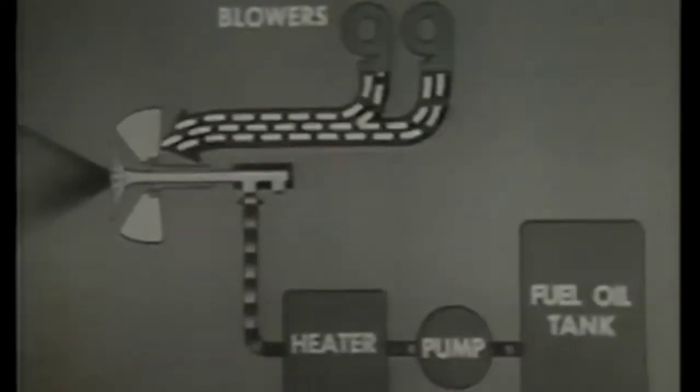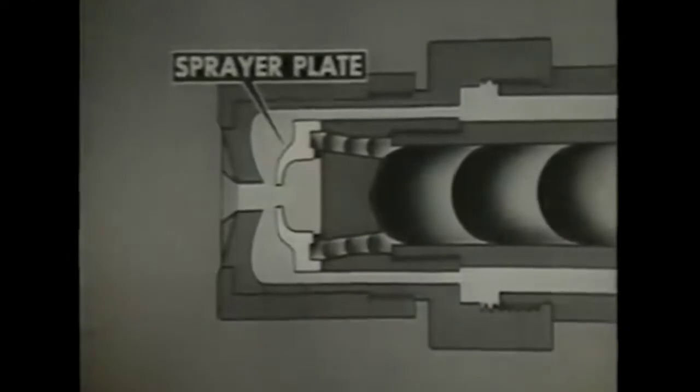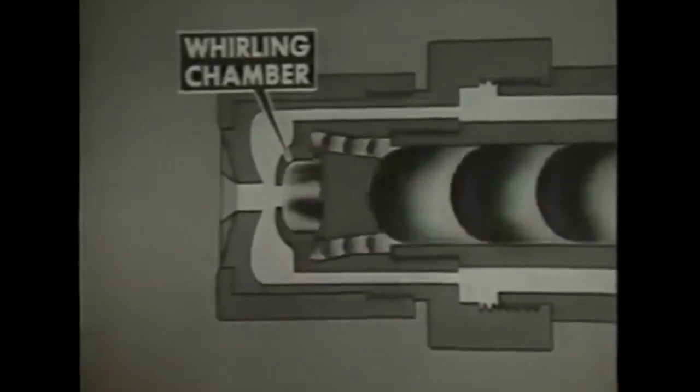In this type of burner, only part of the oil that goes through the burner is actually burned. The remainder returns to the fuel oil pump. Air doors and a bladed cone give the whirling motion to the air that enters the register to mix with the oil, as in the burner seen previously. The oil, heated and under pressure, is forced through the inner tube of the burner to the sprayer plate, where the oil is rotated in the whirling chamber. The oil leaves through the sprayer plate orifice. Centrifugal force sends some of the oil into the return line and back to the fuel oil pump. The remaining oil continues through the orifice into the furnace.